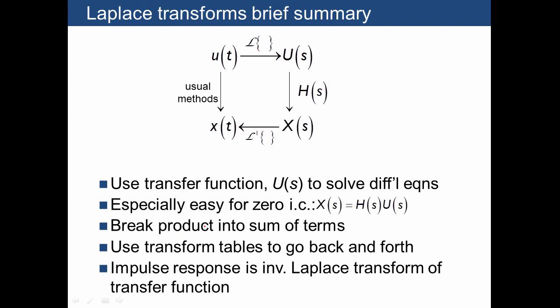Then you have to break that product into a sum of terms, which we haven't talked about yet. But you may have already had some experience with what's called partial fraction expansion. That's the method to do that. Then we use the transform tables to go back and forth. So there's actually a mathematical definition of the transform that we will use very little because it's actually more convenient and useful to use the tables most of the time. And then the other thing we talked about is how the impulse response is actually just the inverse Laplace transform of the transfer function. Again, this is for zero initial conditions.